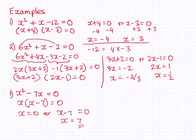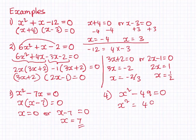This type of question is straightforward — you just need to factorize. Sometimes you could have a question like example 4: x squared minus 49 equals 0. Since 49 is a perfect square, we can rearrange to x squared equals 49 and square root both sides. That gives x equals plus or minus 7, so the two answers are x equals positive 7 or x equals minus 7.